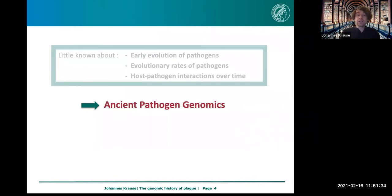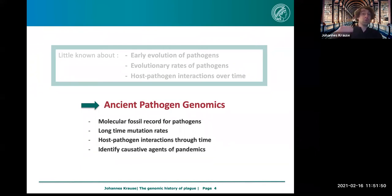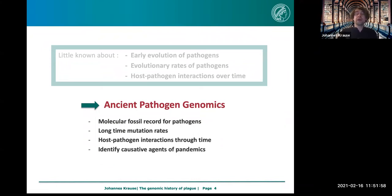Using this technology, we were able to go back in the past, study ancient pathogens, and produce a molecular fossil record to learn about mutation rates and the interaction between host and pathogen — how the pathogen adapted to us and how we adapted to it. We can also identify the agents that caused pandemics in the past. From historical and archaeological records, we often have evidence for large-scale epidemics, and now we can actually know what pathogen caused them — such as the Black Death.